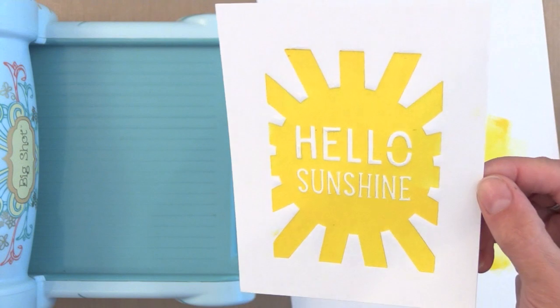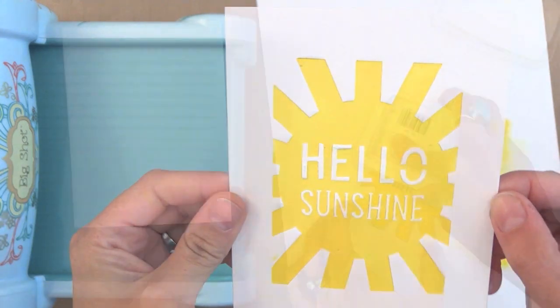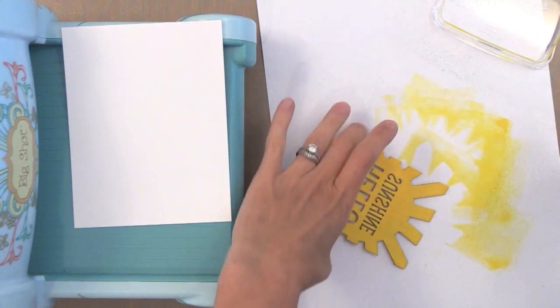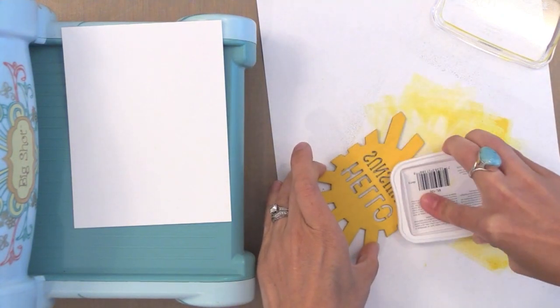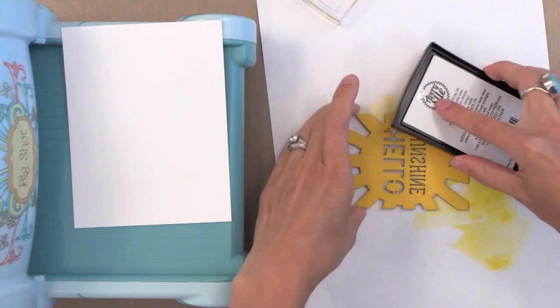I tried this with a few different pigment inks and it worked well with all of them. You just want to put as much ink onto the wood veneer as you can. Now I'm going to do it again, change it up a little bit so that you can see it in action again.